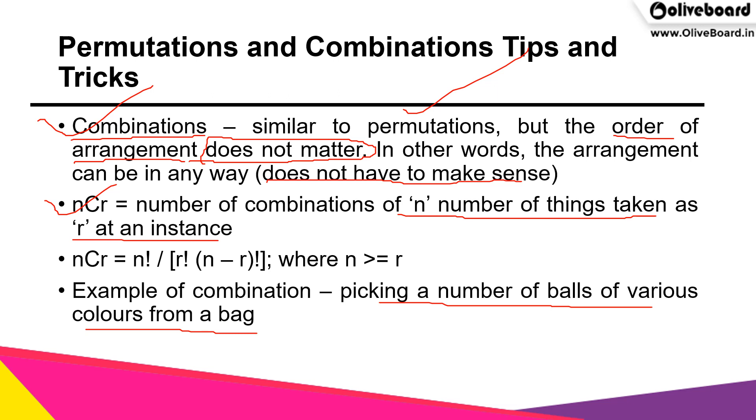That's one example of combination. Like permutations, we have the nCr formula: n! / (r! × (n-r)!). You have to understand this formula. Also, n has to be greater than or equal to r; it cannot be less than r. Either it should be equal to r or greater than r.